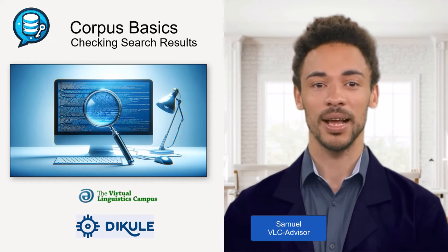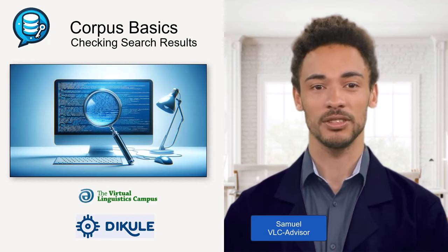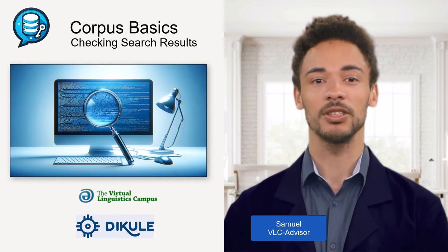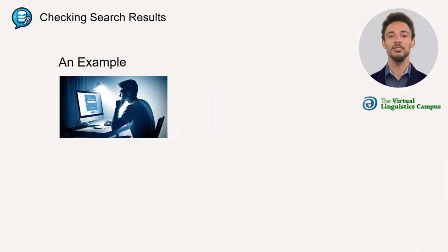Hello and welcome back. In the following, I will show what you should pay attention to when checking search results, and will propose one way to work with them. Let's illustrate this with the irregular verb 'get' — its past tense and its past participle form is 'got'.